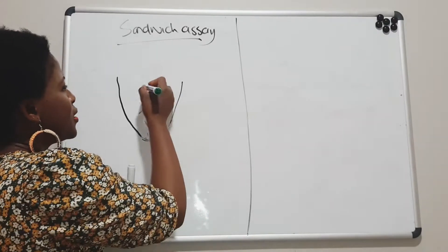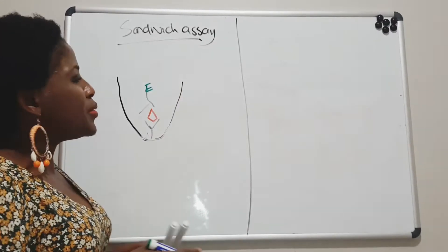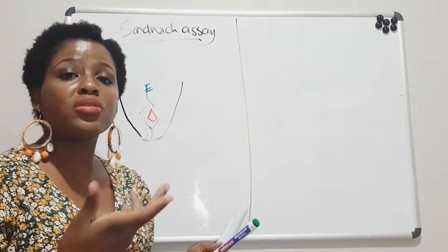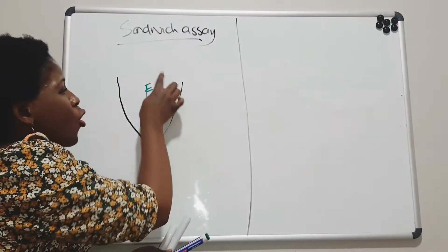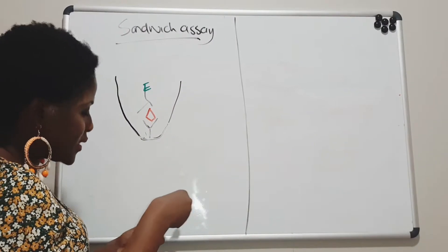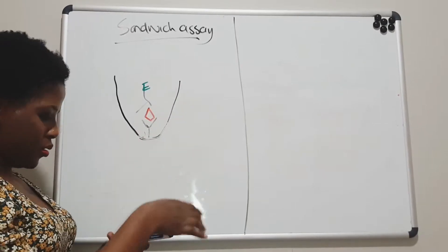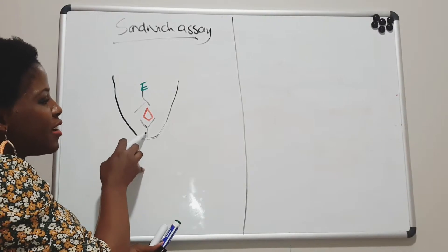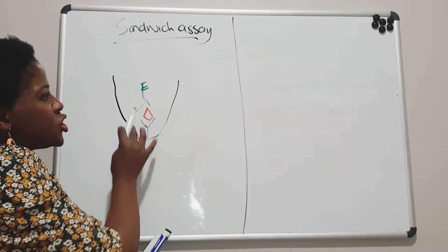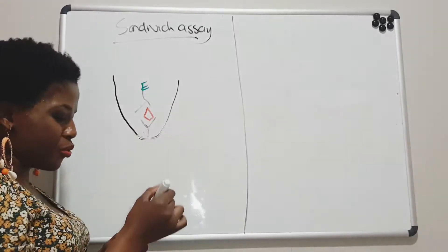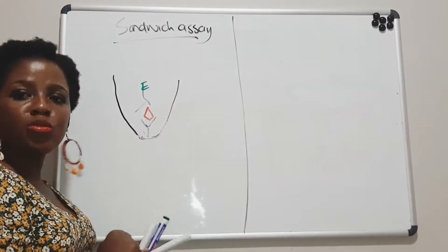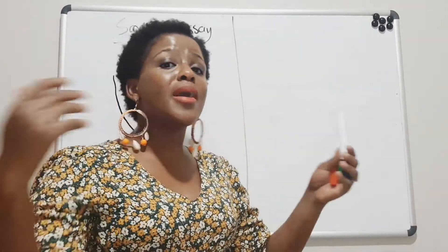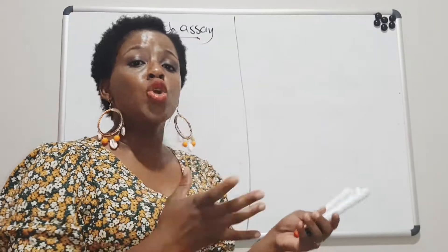That enzyme-tagged antibody — it can be alkaline phosphatase (ALP) or horseradish peroxidase — has the ability to produce light. All of these components form an antigen-antibody reaction. You can see we have: an antibody, the antigen, and an antibody with an enzyme — they form a sandwich. That is why this is called a sandwich assay.